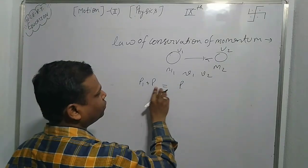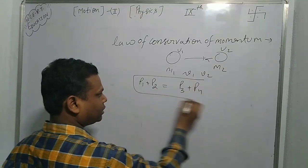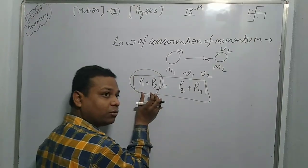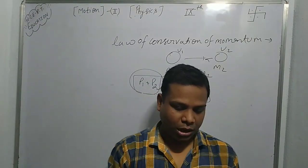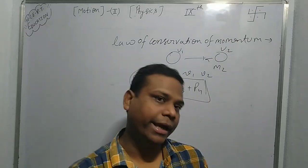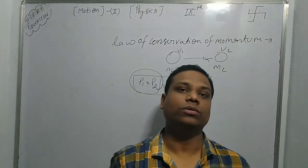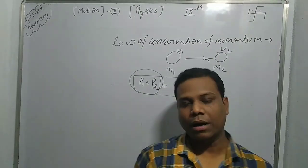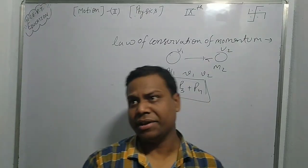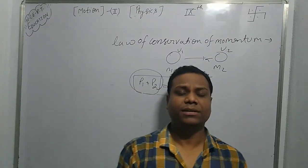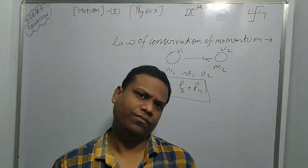So p1 plus p2 equals p3 plus p4 — these are the total momenta before and after collision respectively. The Law of Conservation of Momentum states that the total momentum before collision is equal to the total momentum after collision. In the next video I will explain some other interesting examples and important formulas. Thank you.